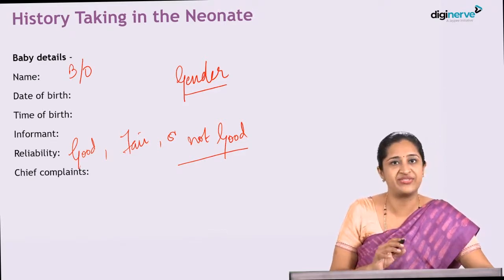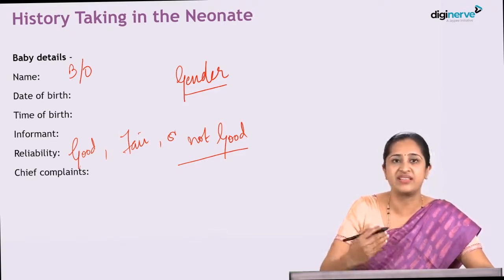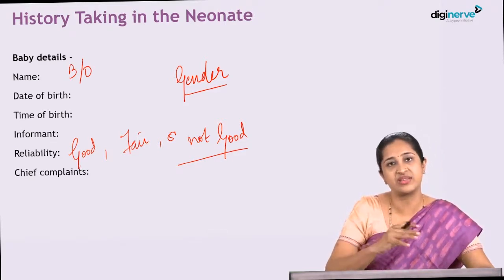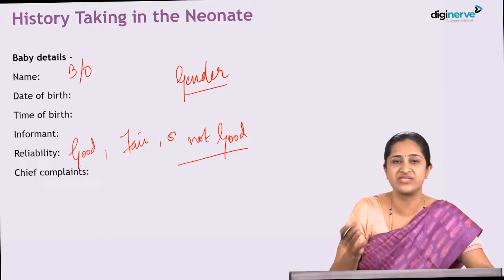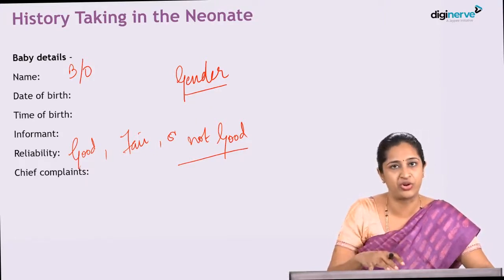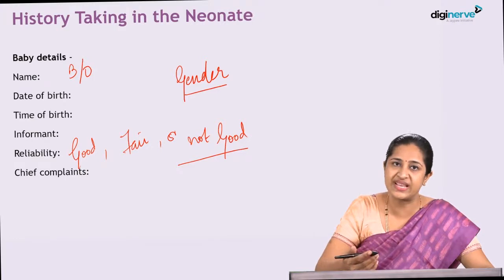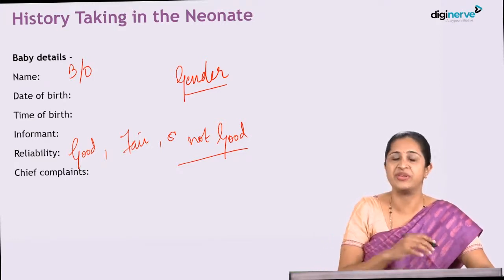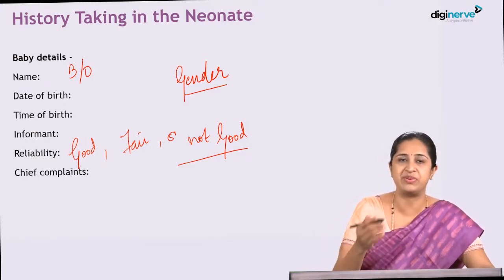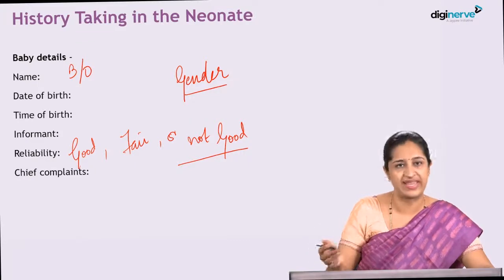The next thing is chief complaints — what exactly is the reason the baby has been brought to you. If it is just a routine assessment, the chief complaint will be for routine examination or essential newborn care. If there are specific chief complaints, you will elaborate them. If there is no specific chief complaint, you will say this is for routine neonatal care.